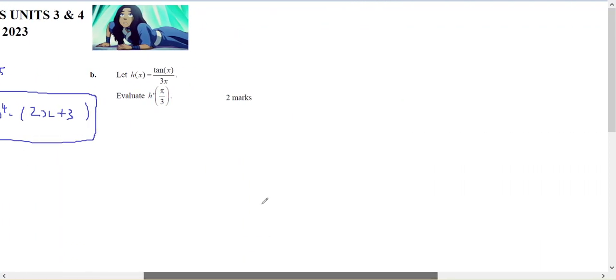In part b, it's a quotient rule question. I've got an x in the numerator and an x in the denominator. So u is the numerator, which is the tan of x. So u dash, formula sheet tells you sec squared of x, which remember is 1 on cos squared of x.